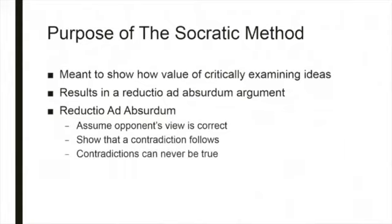Contradictions can never be true. You cannot have something that is red all over and not red all over. A ball cannot be red all over and not red all over. You cannot have a round square — a figure that has four equal sides meeting at four interior right angles and every point on the perimeter equidistant from the center. You can't do it. It's a contradiction, and contradictions can never be true.